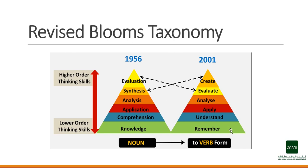There was a major shift at the top two levels. Synthesis became the top level as 'create,' and evaluation became the fifth level, called 'evaluate.' The initial concepts inside are still the same. So the revised order is: remembering, understanding, applying, analyzing, evaluating, and creating — each building on the student's developing thinking from the lower hierarchy of Bloom's Taxonomy.